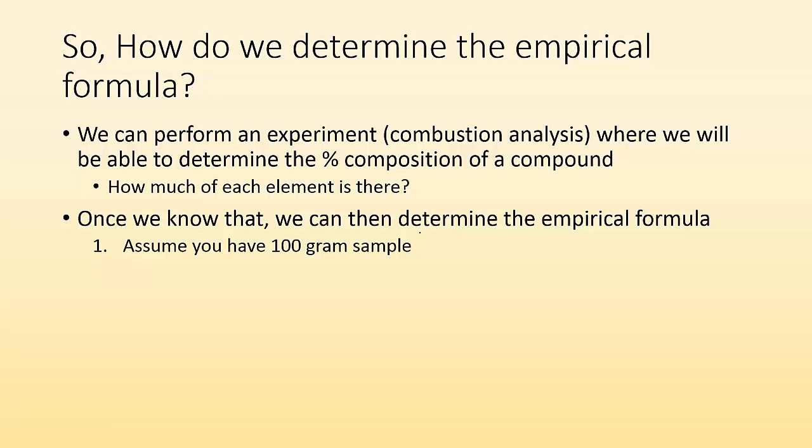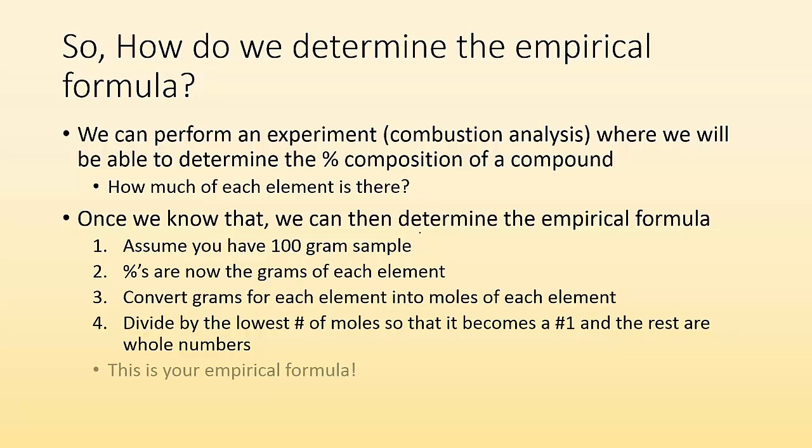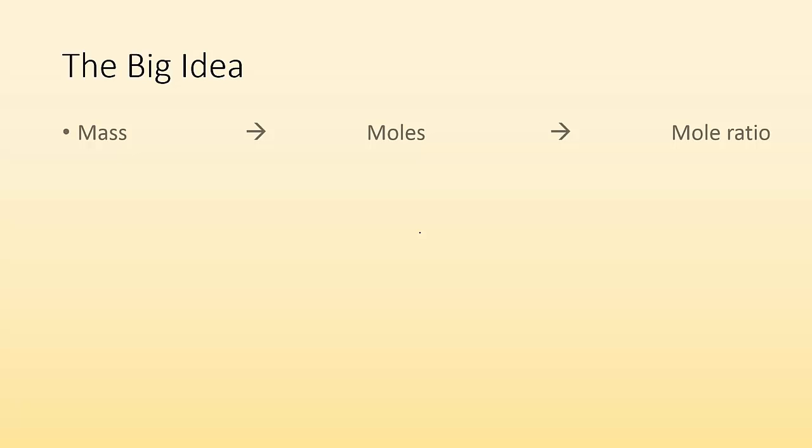Basically, how you do that is you assume you have a 100-gram sample, because then your percentages are now the grams of each element. And then you go, alright, well now I know how many grams of each thing there are. Why don't I convert those grams into moles for each of those elements? Now I know how many moles of each thing I got.